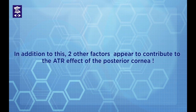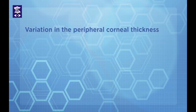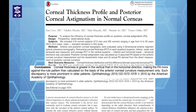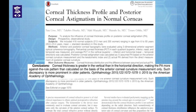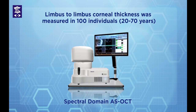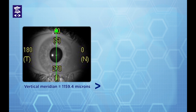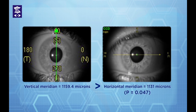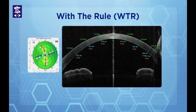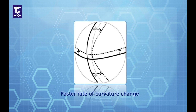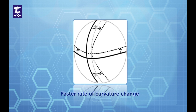In addition to this, two other factors also appear to contribute to the against-the-rule effect of the posterior cornea. The first factor is variation in peripheral corneal thickness. A recent study highlighted that the vertical meridian of the cornea was thicker than the horizontal, with mean peripheral corneal thickness being highest in the superior region. To verify this, limbus-to-limbus corneal thickness was measured in 100 individuals using a spectral-domain anterior segment OCT. Mean corneal thickness in the vertical meridian was found to be about 30 microns thicker than the horizontal, and the difference was statistically significant — observed consistently in eyes with anterior with-the-rule, against-the-rule, and oblique astigmatism. This implies that in the vertical meridian, curvature changes at a faster rate due to rapid change in corneal thickness from center to periphery, thus increasing its toricity.